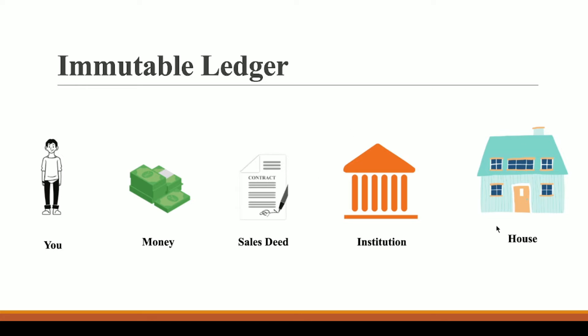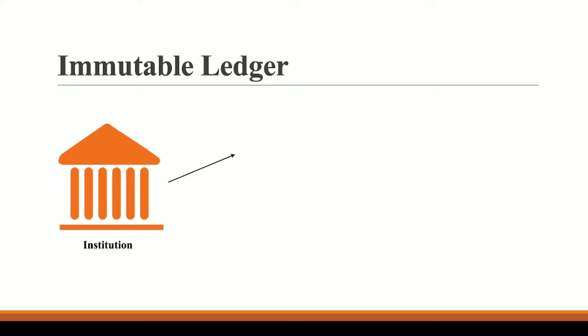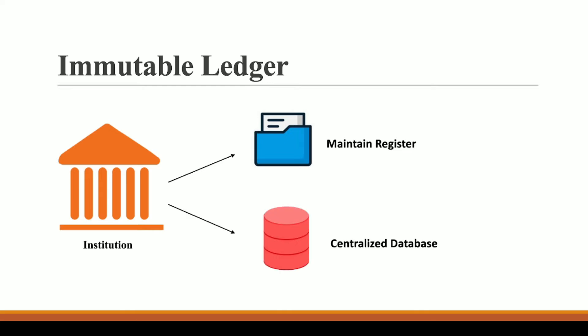You go to the government officials saying that this is the contract you signed with party B, and now the house title belongs to you. Think of the title as the name of the house — it means the house belongs to you since you paid party B and have all the documentation. The government institution will then record all the important information in a file, a register, or a centralized database.